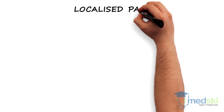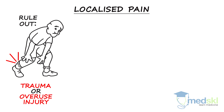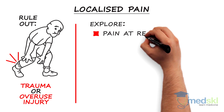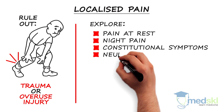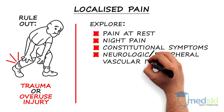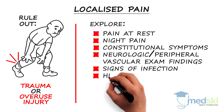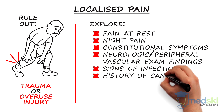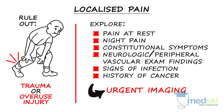If the pain is localized, rule out a history of trauma or overuse injury. It is then important to explore the following red flags: pain at rest, night pain, constitutional symptoms, neurologic or peripheral vascular exam findings, signs of infection, or personal history of cancer. Further investigation with urgent imaging is needed if any of the above is present.